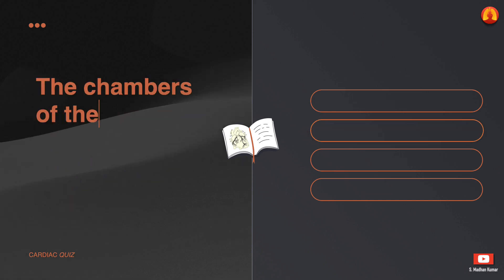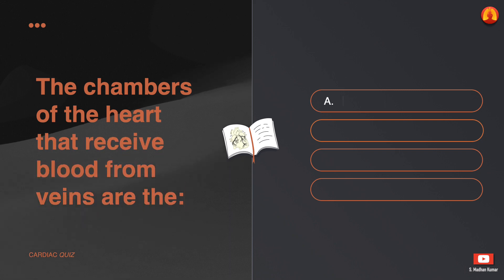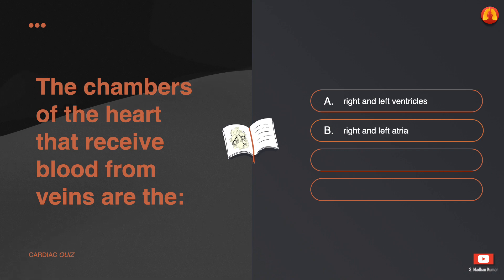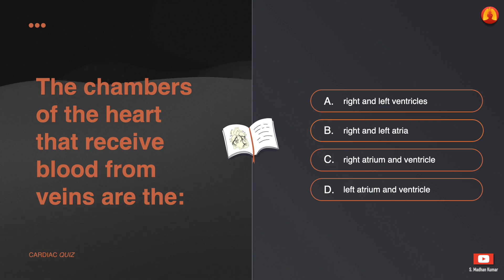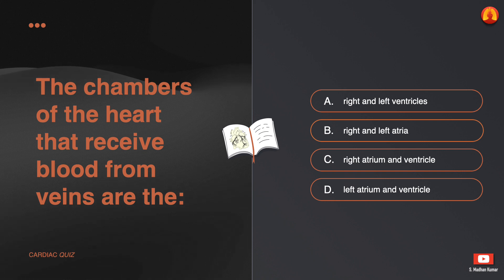The chambers of the heart that receive blood from veins are the: A. Right and left ventricles. B. Right and left atria. C. Right atrium and ventricle. D. Left atrium and ventricle. The correct answer is: right and left atria.